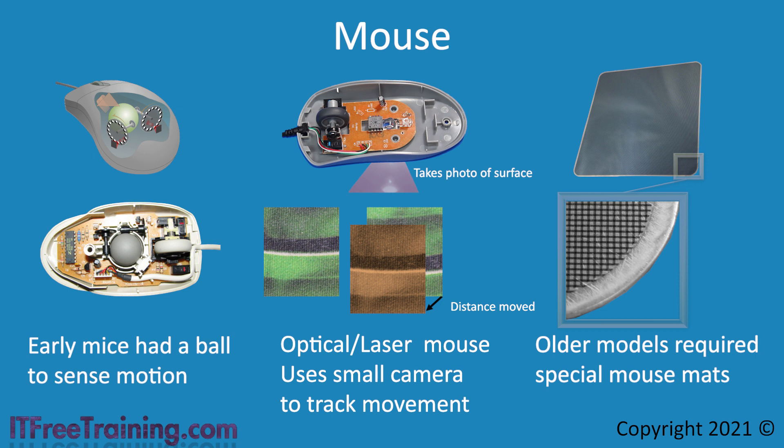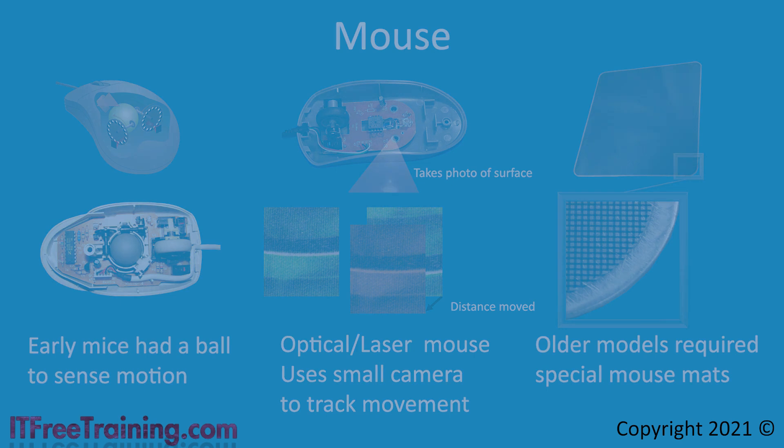Generally speaking, the cheaper mice on the market use an LED for the light source and potentially a lower resolution sensor. As the price goes up, the sensors generally improve and the light source changes to a laser. If you are doing a lot of fine graphic work or playing computer games, the extra accuracy helps. If you are using basic applications like MS Office, the additional accuracy is not worth the extra money — it does not hurt to have it, but it is not really needed.